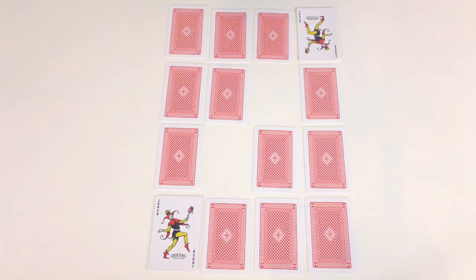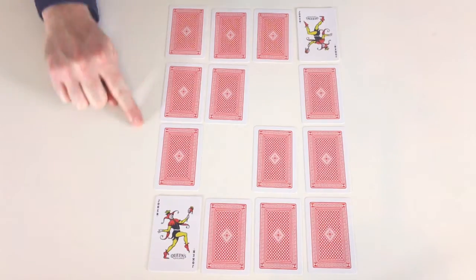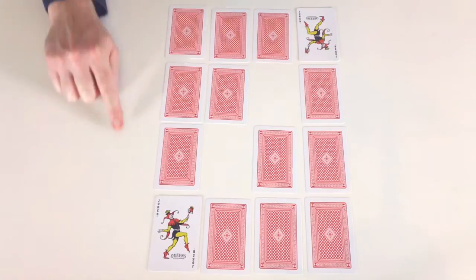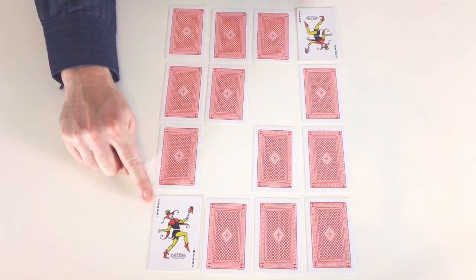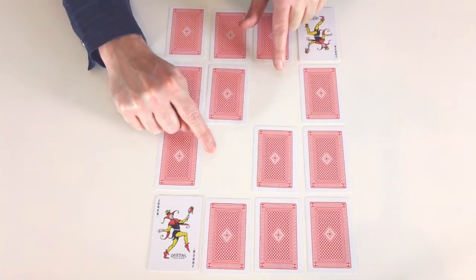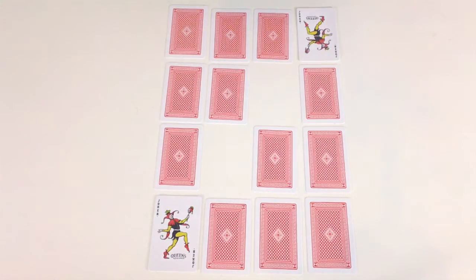Okay, so first you need to set out your cards in this formation with four along the top and bottom and four cards along the side. The two jokers in the corner and these two spaces diagonally opposite the jokers so you can start moving.